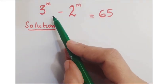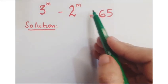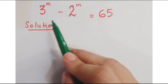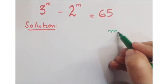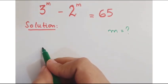Hi guys, look at this question. The question is 3 to the power m minus 2 to the power m is equal to 65 and we have to find the value of m.